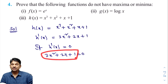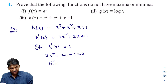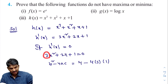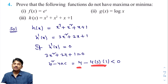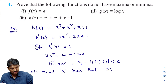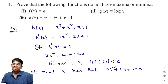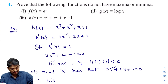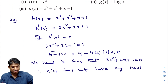I will calculate the discriminant b² − 4ac to determine whether roots are real or imaginary. Here a = 3, b = 2, c = 1. So b² − 4ac = 4 − 4(3)(1) = 4 − 12 = −8, which is less than 0. Since b² − 4ac < 0, there is no real x such that 3x² + 2x + 1 = 0, meaning no real x such that h'(x) = 0. Therefore, there is no critical point, and h(x) does not have any maxima or minima values.